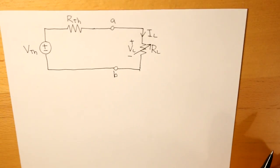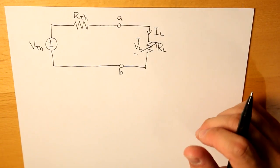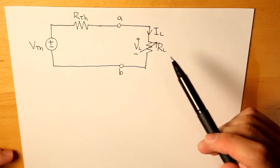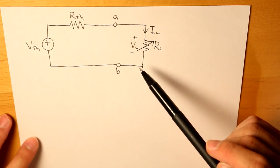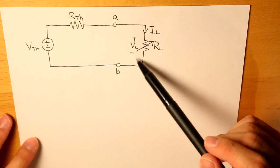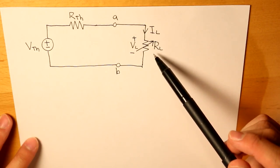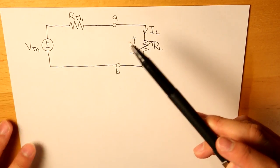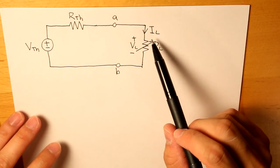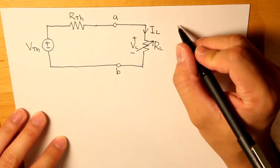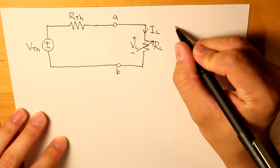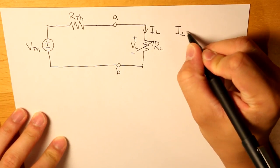Now when we come across questions where we have to deal with the variable resistor, most of the times we have to find what the voltage across it is and also the current. If you want to find what the load current is, that would essentially just be IL equals